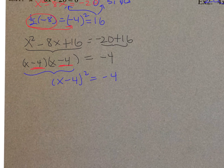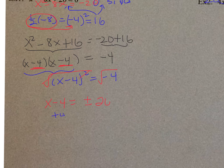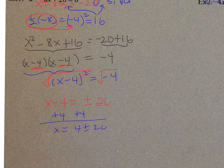To get rid of the square, we square root both sides: x − 4 = ± √(−4). The square root of negative 4 is 2i, so x − 4 = ± 2i. Adding 4 to both sides: x = 4 ± 2i. The two roots are x = 4 + 2i and x = 4 − 2i.